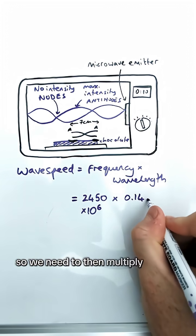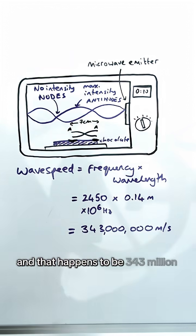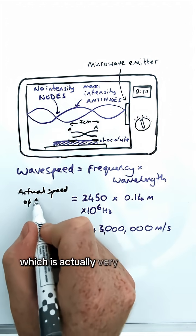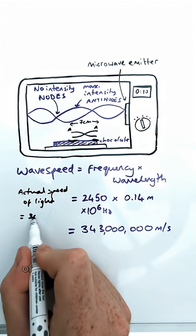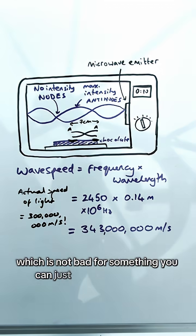So we need to then multiply that by our wavelength to give us our speed. And that happens to be 343 million meters per second, which is actually very close to the actual speed of light of 300 million meters per second, which is not bad for something you can just find in your kitchen.